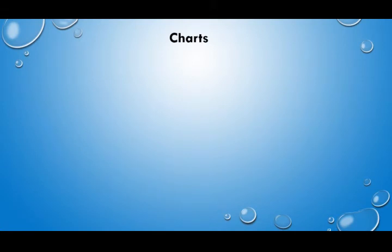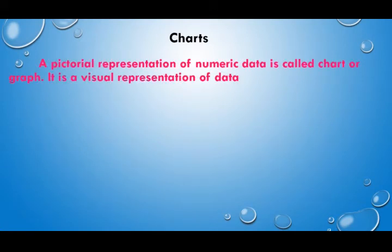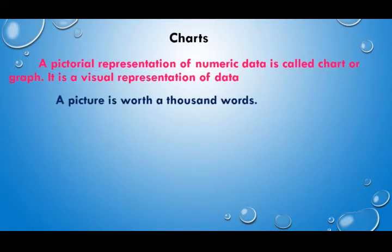What is meant by a chart? A pictorial representation of numeric data is called a chart or graph. It is a visual representation of data. A picture is worth a thousand words — it is one of the famous common proverbs. It means a picture may convey an idea more quickly and effectively than the written word. So it is a visual representation of data.